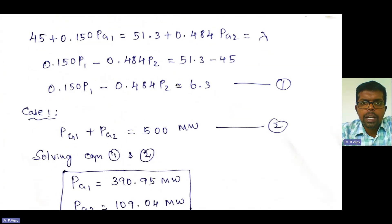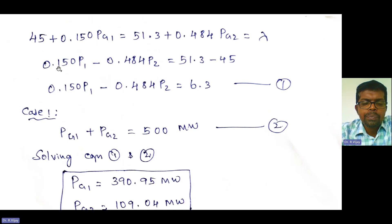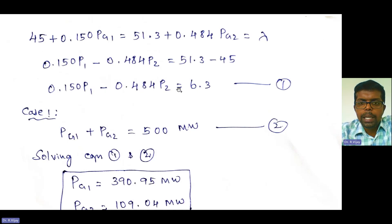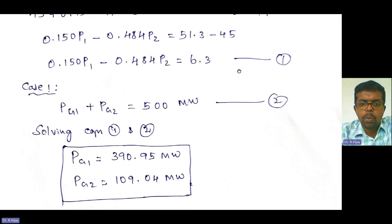Equating IC1 and IC2, after simplification we get: 0.150·PG1 − 0.484·PG2 = 6.3. Take this as Equation 1.